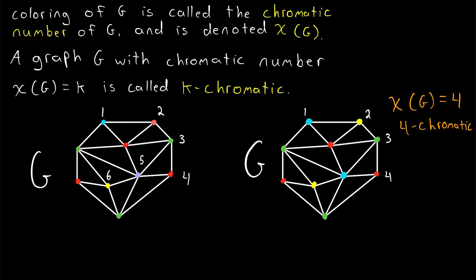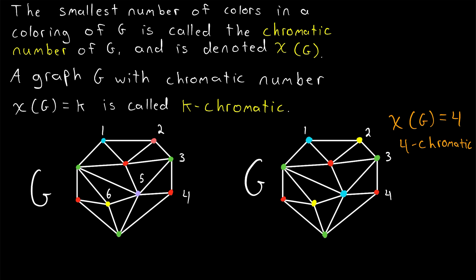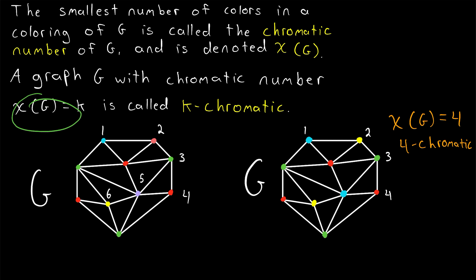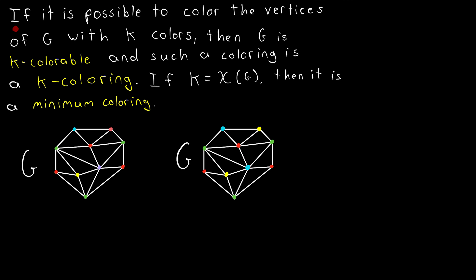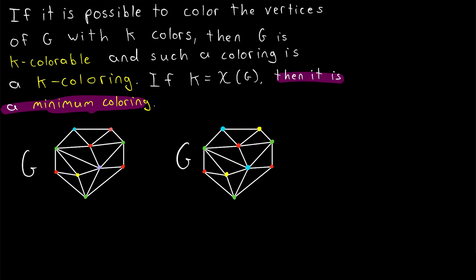So one last time, recapping that definition: the smallest number of colors in a coloring of a graph G is called the chromatic number of G, denoted chi of G. A graph with chromatic number K is said to be K chromatic. If it is possible to color the vertices of a graph G with K colors, then G is said to be K colorable, and such a coloring is predictably called a K coloring.